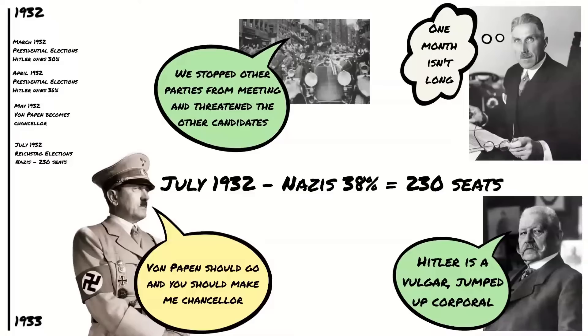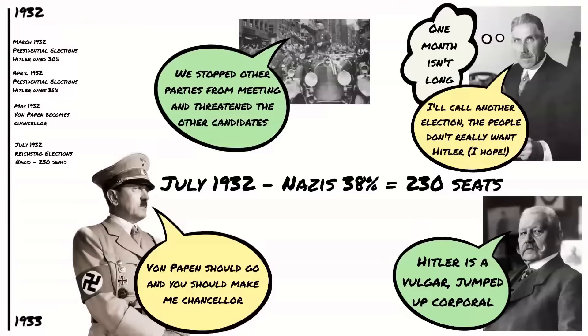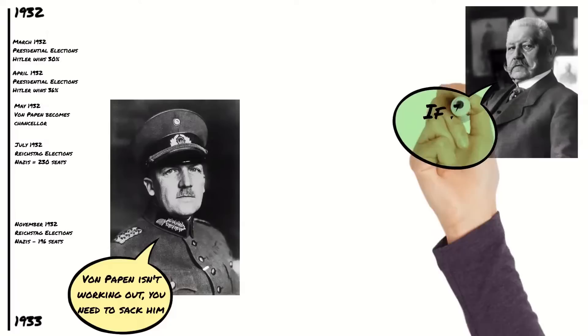Von Papen stayed on as Chancellor, but without the support of the people or the Reichstag he called another election in November 1932. He had hoped that the Nazi vote would fall and Hitler would disappear. He was to be disappointed though — although the Nazi vote did fall a bit, the Nazis were still the largest party with 196 seats. Von Schleicher advised von Hindenburg to sack von Papen, and eventually von Hindenburg agreed. On the 17th of November, von Papen stepped down.